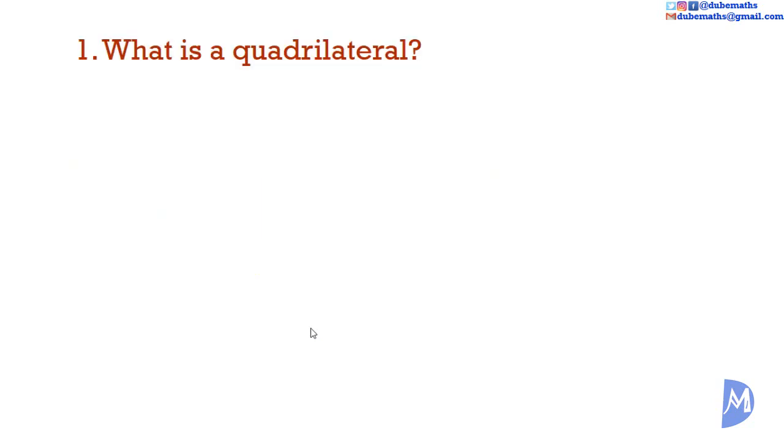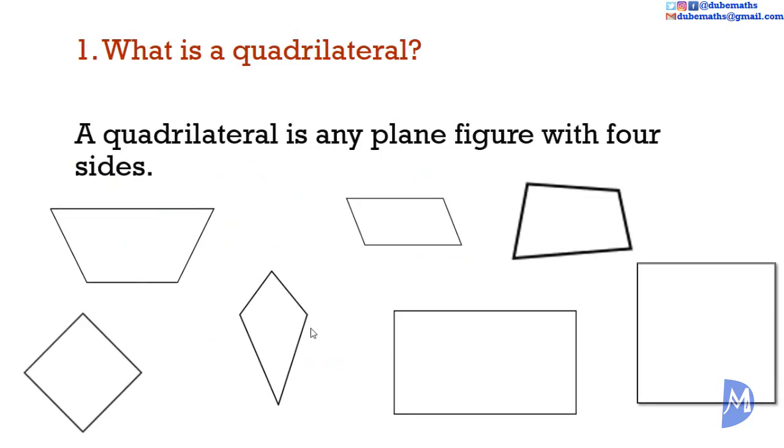Question 1. What is a quadrilateral? A quadrilateral is any plane figure with four sides.